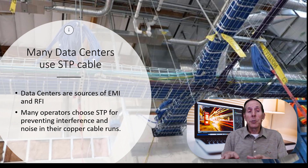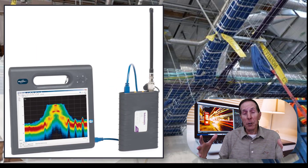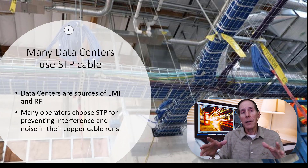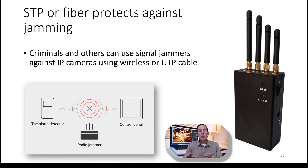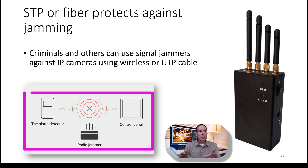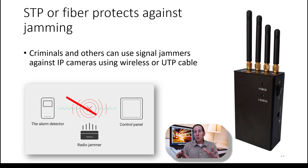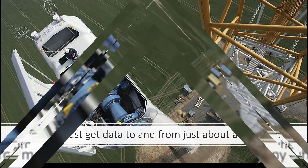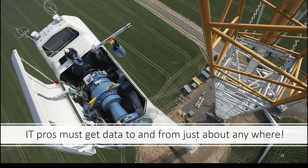Many data centers use STP cable because of the enormous amount of RFI generators — servers and storage devices — in their building, and it helps eliminate a lot of that unwanted induced voltage. When you're using unshielded twisted pair in security systems like cameras and alarm detection units, criminals have found that jammers can overwhelm the cable and literally block any effort to detect a criminal break-in.